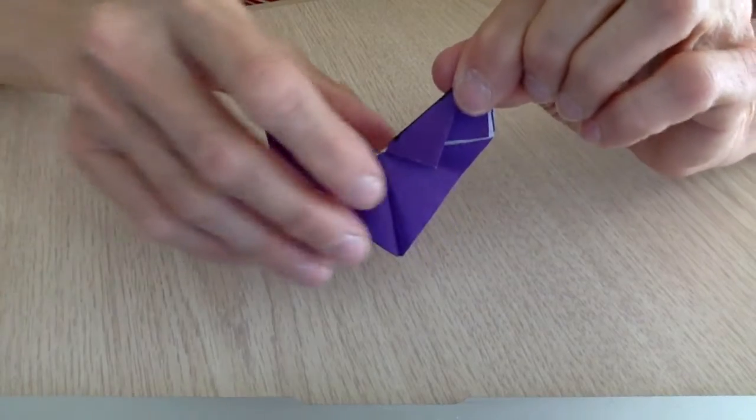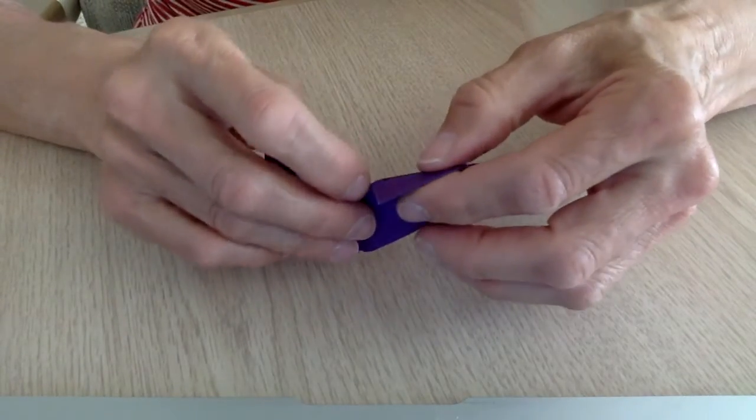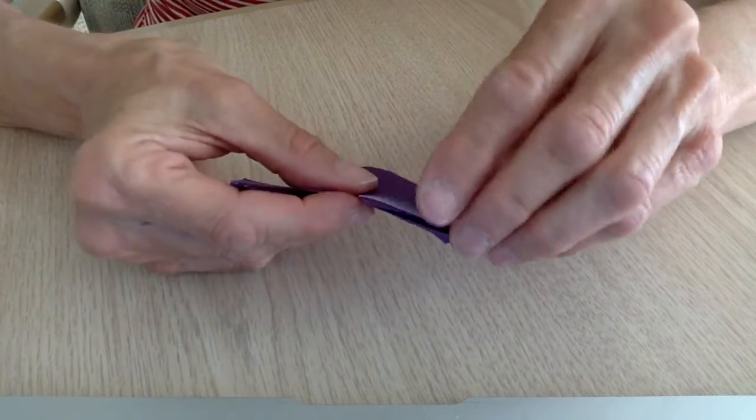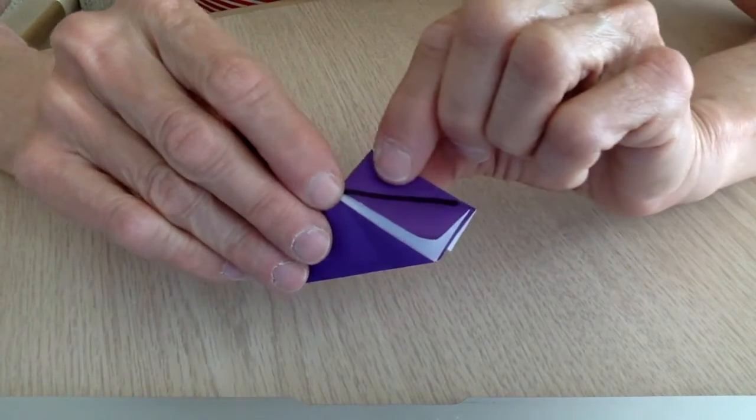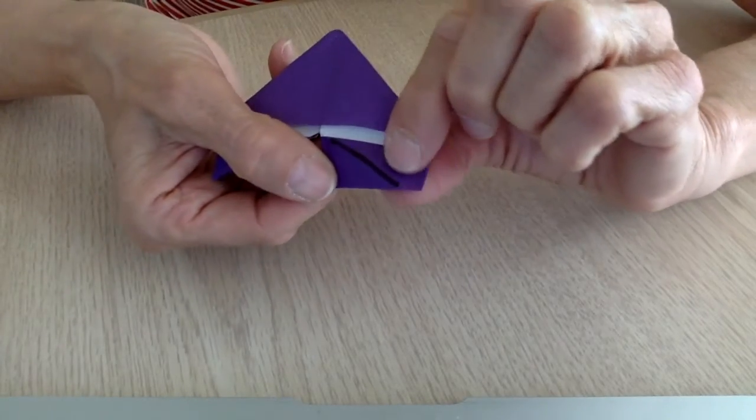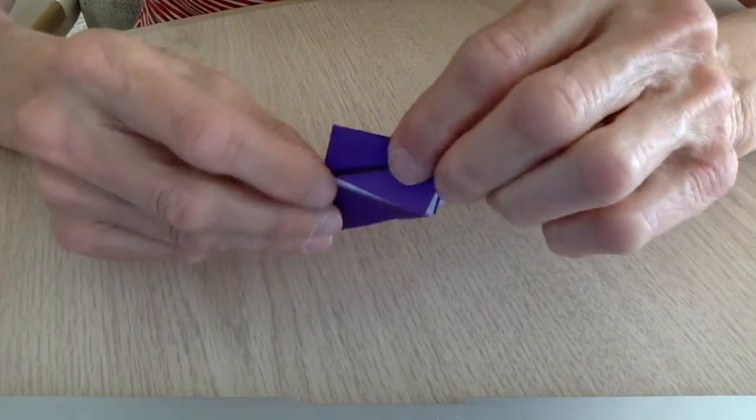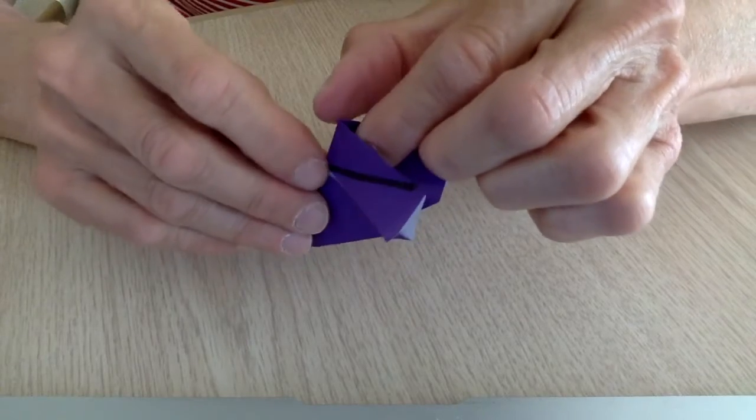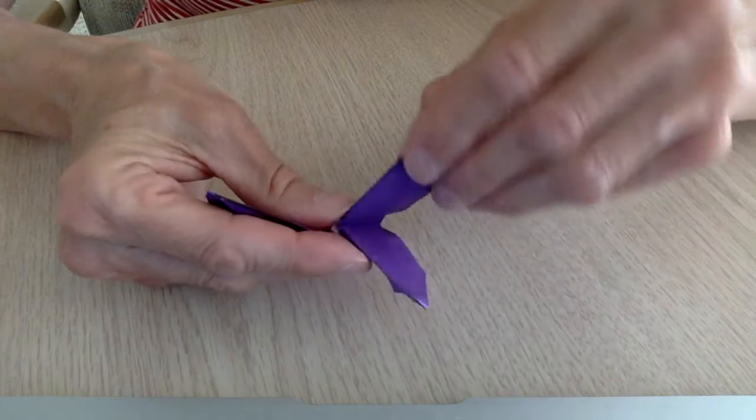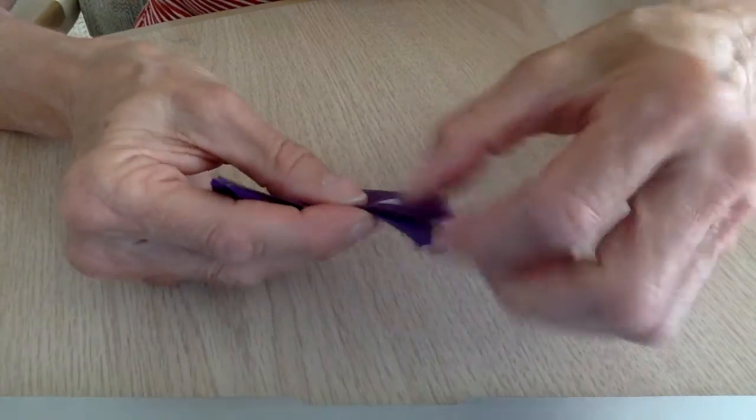There's not much left to do now. What you need to do is pick up the collar on one side. I made lines so that you could see where your folds are. Where your folds are, open it up here and close it inside on your folds.